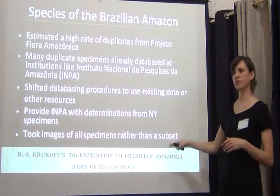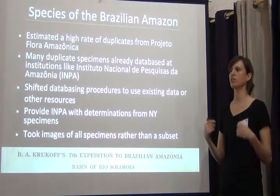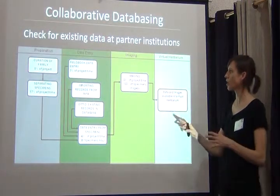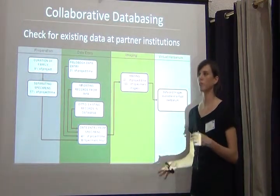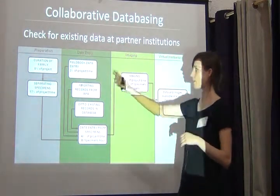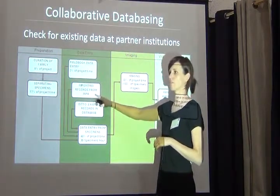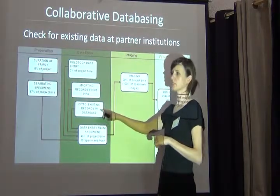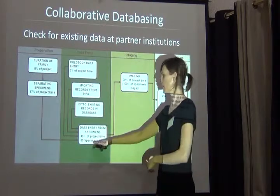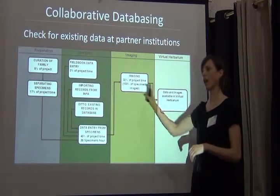We then shifted to taking images of all specimens. We were barcoding things, looking for duplicate matches, and imaging everything as we went along. This made our workflow a bit more complicated, but our rates became much faster. We were still curating and separating specimens, but importing records from our collaborator and dittoing existing records, so specimen data entry went from about 10 specimens an hour up to about 30 specimens an hour. Then we imaged all the specimens and they went online.